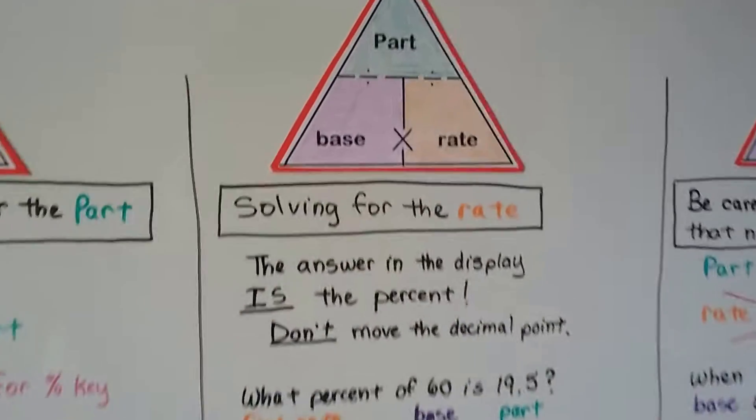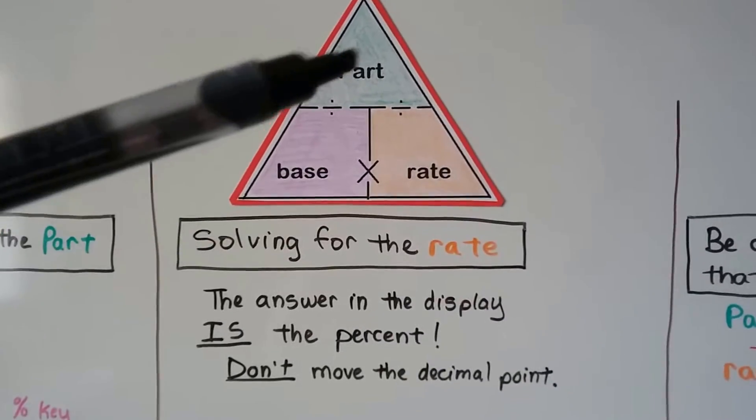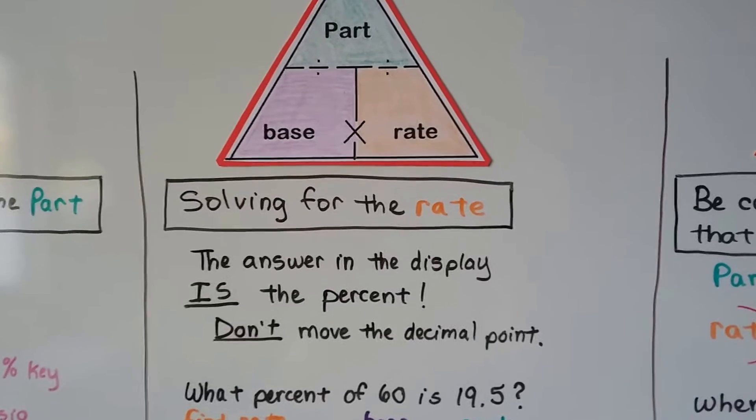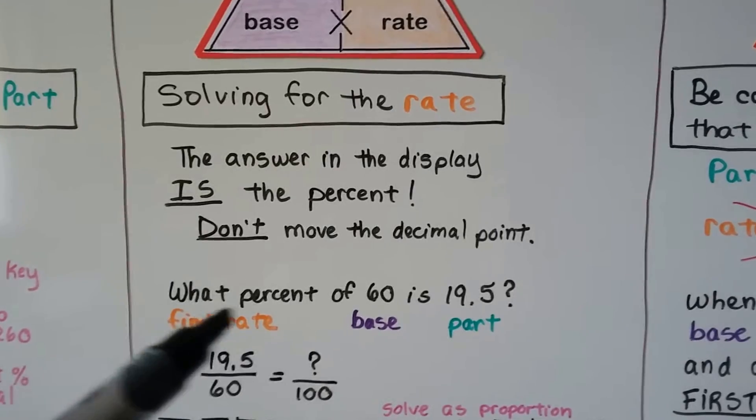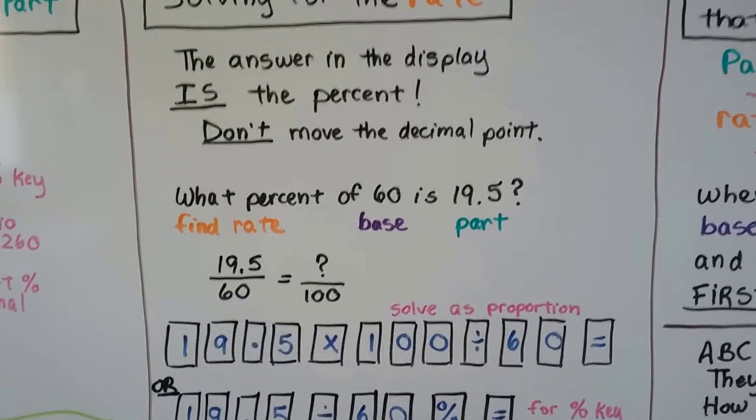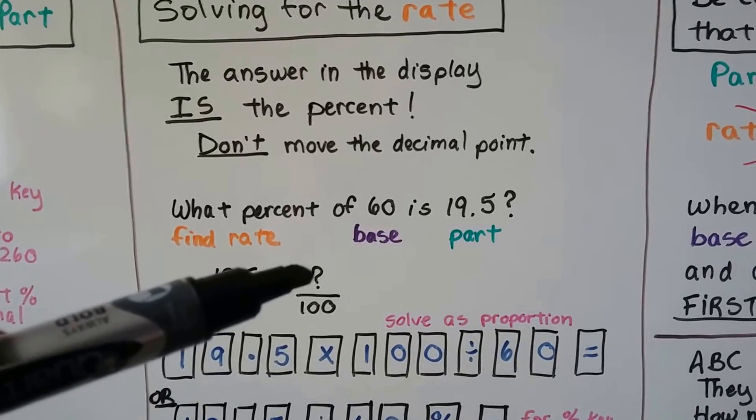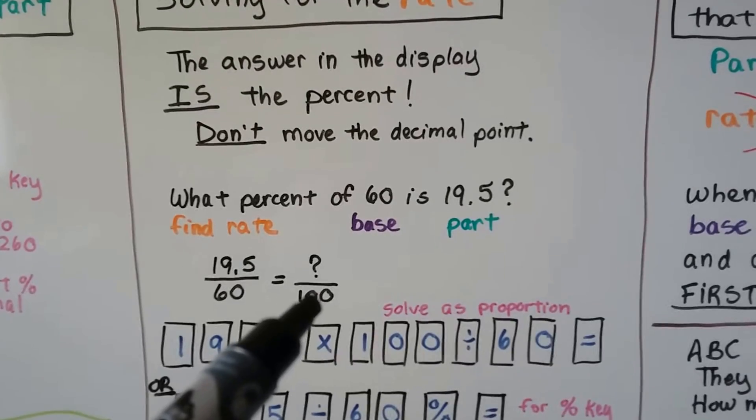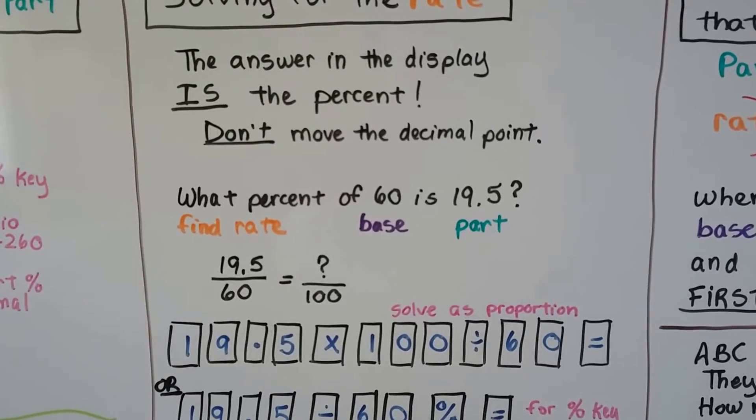If we're solving for the rate, then we're going to do the part divided by the base. And the answer in the display is the percent. We don't move the decimal point. If it says what percent of 60 is 19.5, that means we need to find the rate and we know the base and the part. As a proportion, we would do 19.5 as the part, 60 as the base. We need to find the rate over 100. And we would do 19.5 times that 100, and then we would divide it by the third number, the 60, and then that would give us the rate.